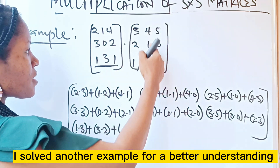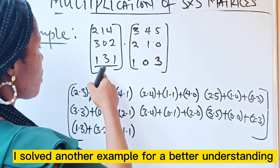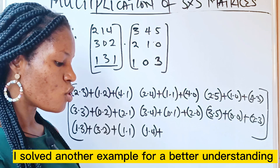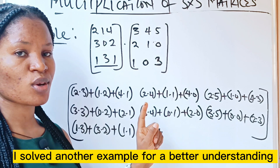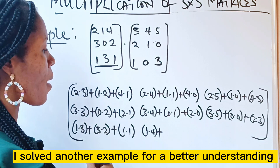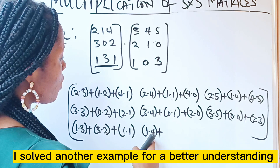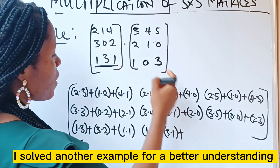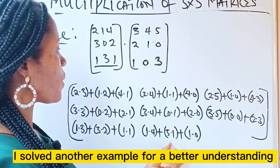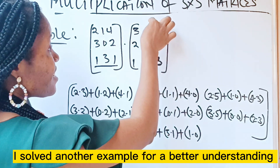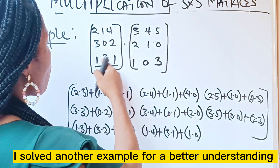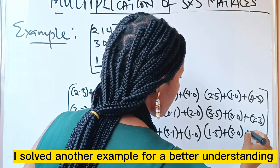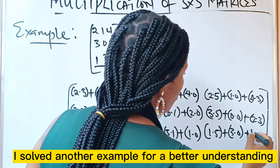Now we use the third row to multiply the second column to form the second number — be careful not to make mistakes while picking your numbers: 1 times 4, plus 3 times 1, plus 1 times 0. Then the third row multiplies the third column: 1 times 5, plus 3 times 0, plus 1 times 3.